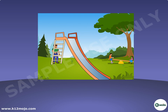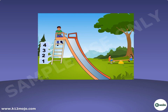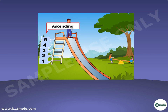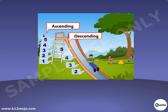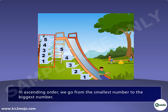Let me ascend the steps. Ascend means go up: 1, 2, 3, 4, 5. I am on the top now. I will come down again — this means I am descending: 5, 4, 3, 2, 1.